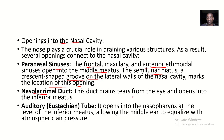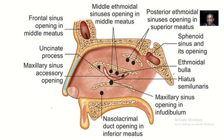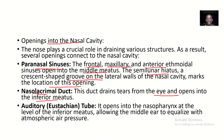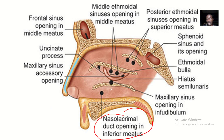Next we have the nasolacrimal duct. The nasolacrimal duct drains tears from the eye and it opens into the inferior meatus. That's why sometimes when you are crying, you tend to have watery catarrh — it's because of this draining. The nasolacrimal duct opens into the inferior meatus.